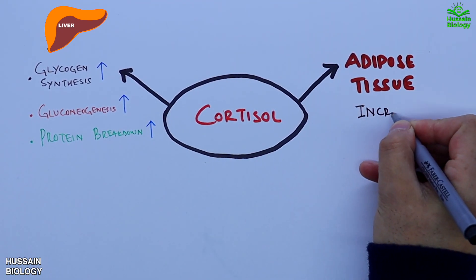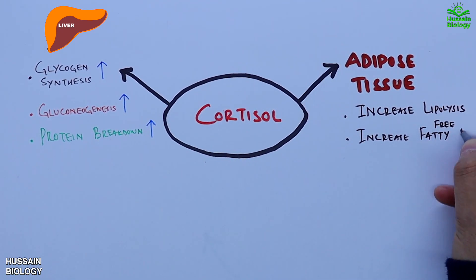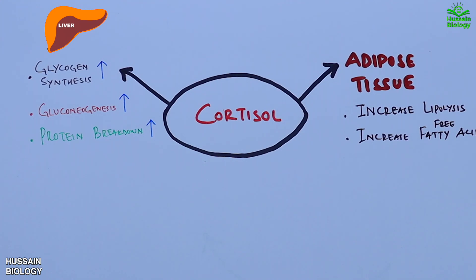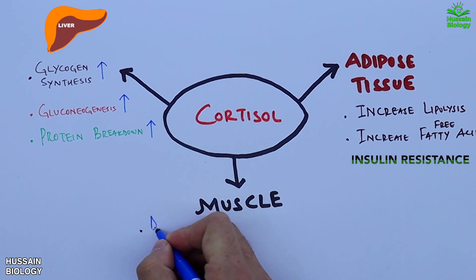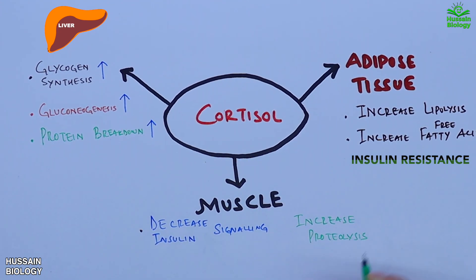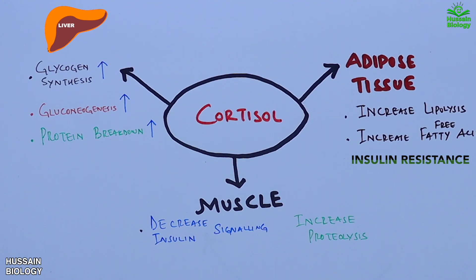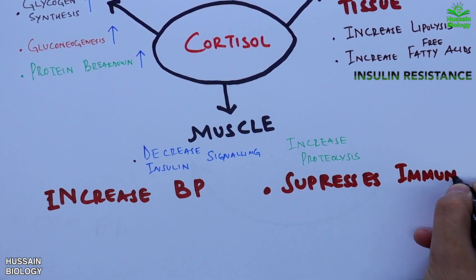Furthermore, cortisol targets adipose tissue, where it increases lipolysis, thereby increasing free fatty acids, which leads to insulin resistance. Cortisol also targets muscles, where it decreases insulin signaling and increases proteolysis, also leading to insulin resistance. Additionally, cortisol has been involved in increasing blood pressure and suppressing the immune system.